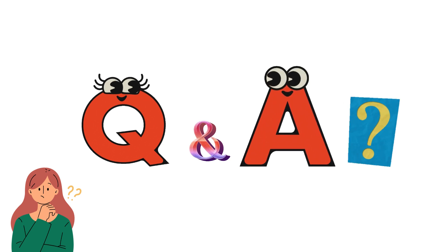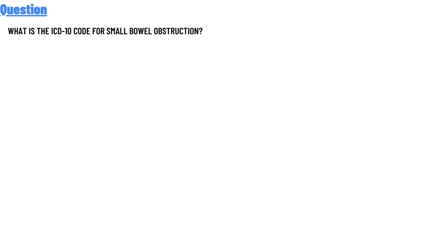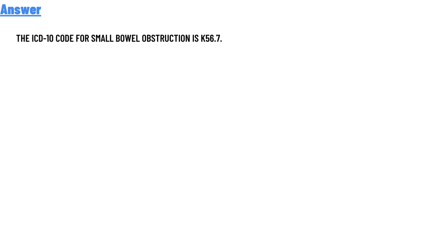Our today's question is: what is the ICD-10 code for small bowel obstruction? The correct answer is that the ICD-10 code for small bowel obstruction is K56.7. That is the answer to the question.